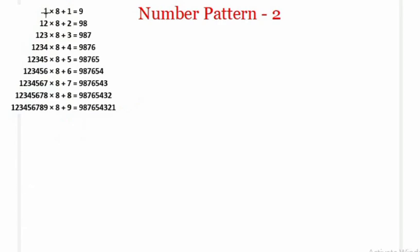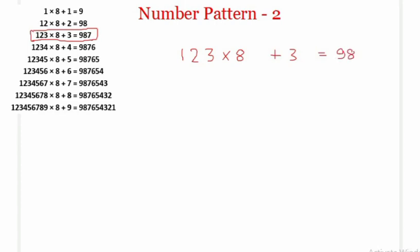Let's take the third row and see how it works: 123 × 8 + 3 = 987. Let's see how this happens. There is a really beautiful way to find this result.